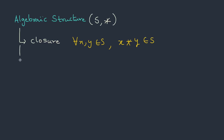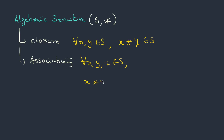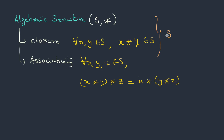The next property is associativity: if we pick three elements x, y, and z from the set and the operation satisfies (x star y) star z = x star (y star z), then it follows the associativity property. If the structure follows both closure and associativity, the structure is called a semigroup.